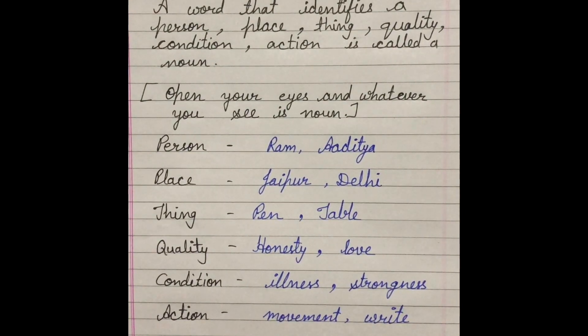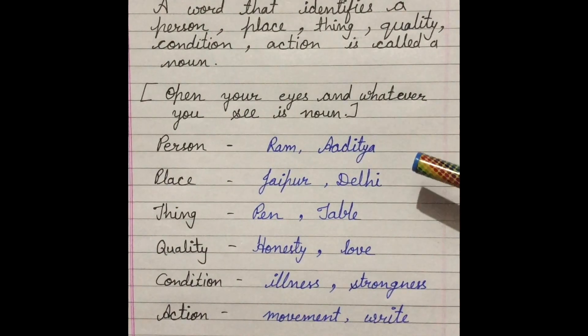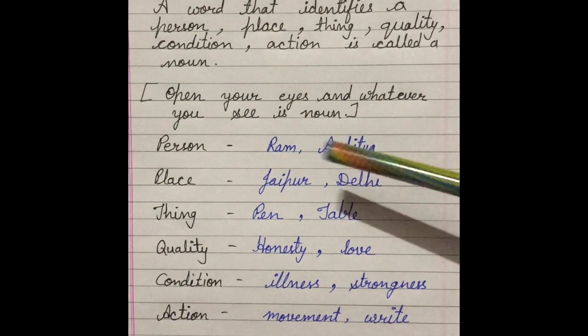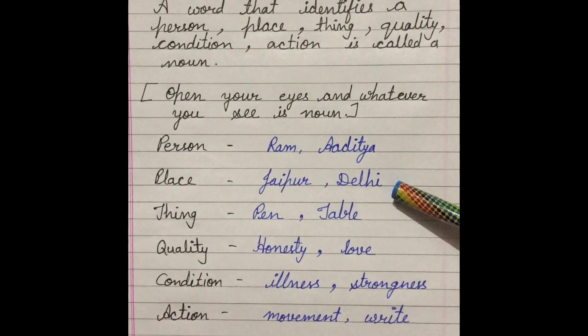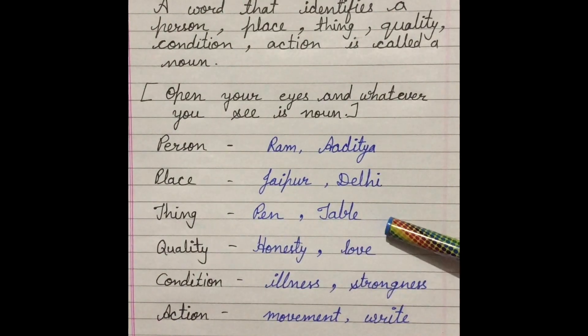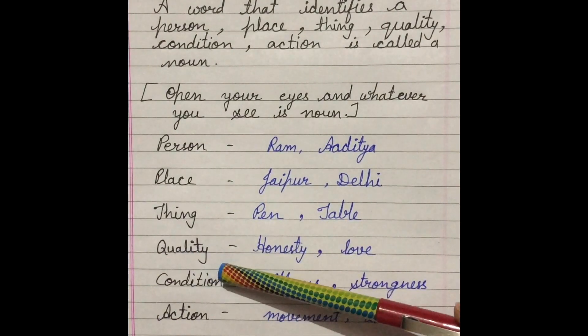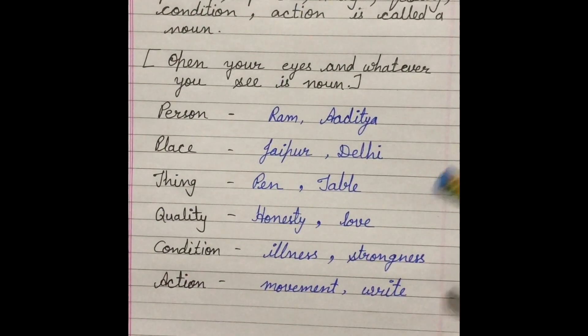For example, persons like Ram, Aditya, any other name - these are noun. Place - Jaipur, Delhi, Agra. Thing like pen, table. Quality like honesty, love. Condition like illness, strongness.